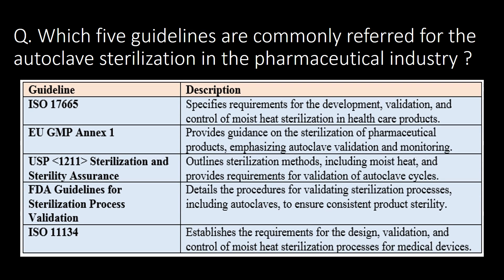Last and very important question: which five guidelines are commonly referred to for autoclave sterilization in the pharmaceutical industry? 1. ISO 17665. 2. EU GMP Annex 1. 3. USP Chapter 1211 — Sterilization and Sterility Assurance. 4. FDA guidelines for sterilization process validation. 5. ISO 11134 — these are the guidelines commonly referred to for autoclave sterilization in the pharma industry.